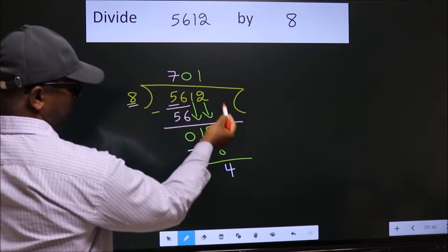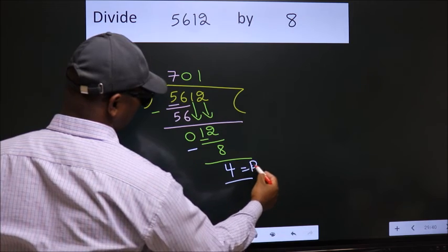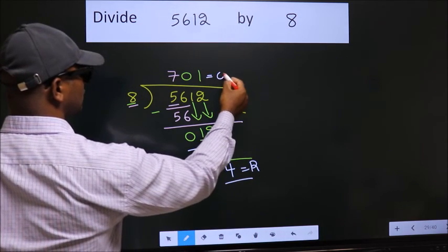No more numbers to bring it down. So we stop here. This is our remainder. This is our quotient.